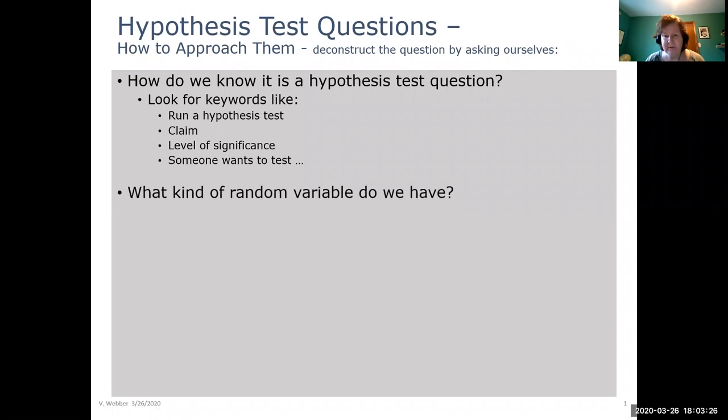We then have to determine what kind of random variable we have and remember we have two variables: means and proportions.